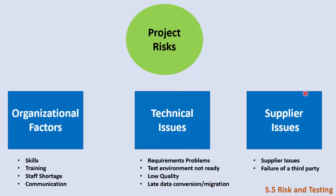The third category is supplier issues, meaning someone outside the company who supplies us with resources. If we have an issue with that supplier, or if a third party fails to deliver — where the company is the first party, the client is the second party, and the third party is someone in between providing value to both — that failure is a project risk that may delay us.